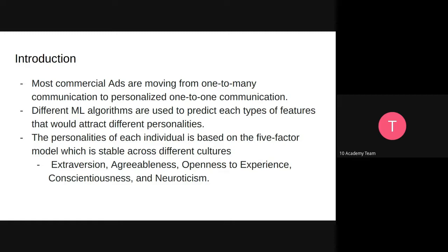From the marketing perspective, we can design different ads targeting each different type of personality. Different machine learning algorithms are used to predict each type of feature that would attract different personalities. The personalities of each individual are based on the Big Five factors, which are stable across cultures — including extraversion, agreeableness, openness to experience, and so on. These personalities are almost the same from country to country, so if we can study the most common categories, we can target each personality category accordingly.